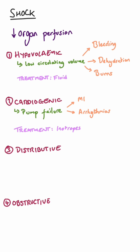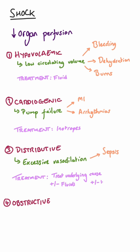Distributive shock is the result of excessive vasodilation, which can occur during sepsis. Treatment for distributive shock involves treating the underlying cause — i.e., getting on top of the infection — along with replacing lost fluids, and some people also need inotrope support as well.